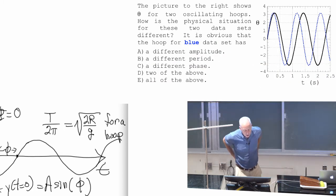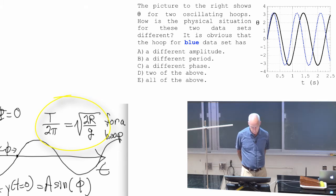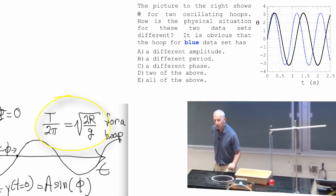Blue one had the shorter period, what does that tell you about r? The radius of the hoop.